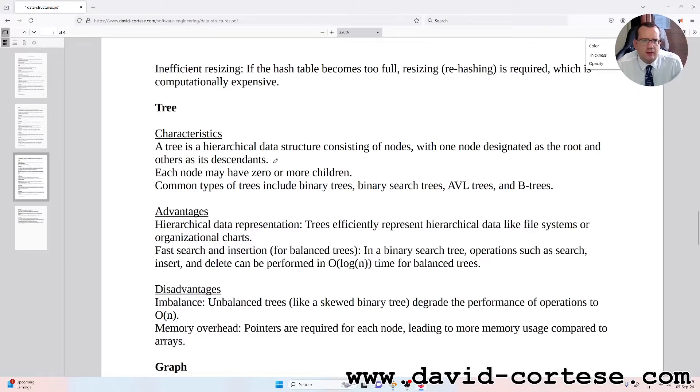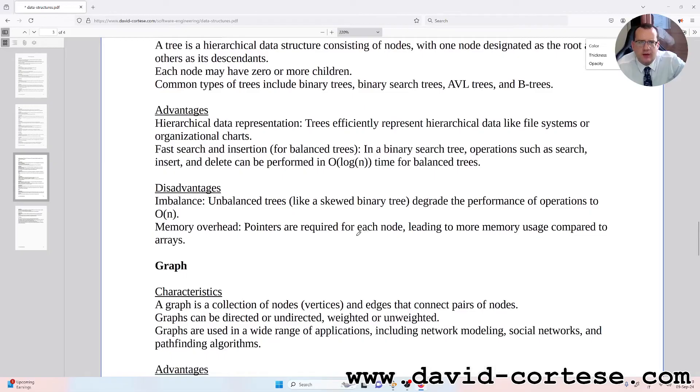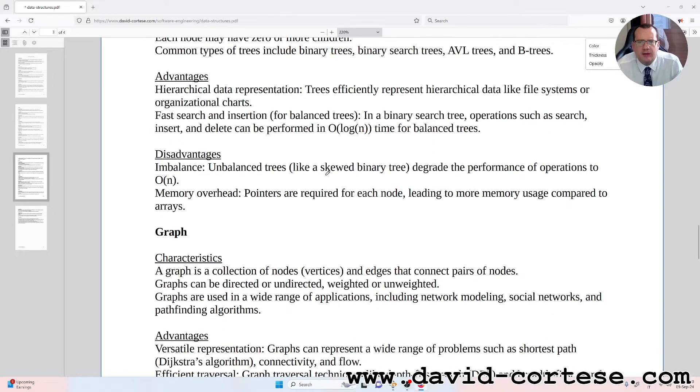Tree characteristics: a tree is a hierarchical data structure consisting of nodes with one node designated as the root and others as its descendants. Each node may have zero or more children. Common types of trees include binary trees, binary search trees, AVL trees, and B-trees. Advantages: hierarchical data representation. Trees efficiently represent hierarchical data like file systems or organizational charts. Fast search and insertion: for balanced trees like a binary search tree, operations such as search can be performed in O(log n) time for balanced trees.